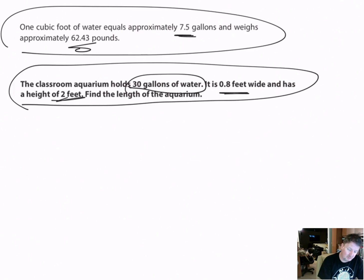The aquarium holds 30 gallons and each cubic foot is 7.5 gallons. If I divide 30 by 7.5, that'll tell me how many cubic feet of water - the volume of the aquarium. 30 divided by 7.5 is going to give me 4 cubic feet. So now I know the volume is 4.